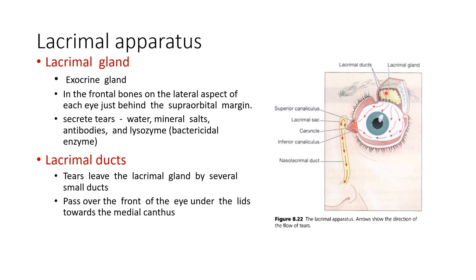The lacrimal gland is an exocrine gland located in the frontal bone on the lateral aspect of each eye, just behind the supraorbital margin. Its function is to secrete tears, which contain water, minerals, salts, antibodies, and the bactericidal enzyme lysozyme. The tears leave the lacrimal gland by several small ducts, pass over the front of the eye under the eyelids, and move towards the medial canthus of the eye.